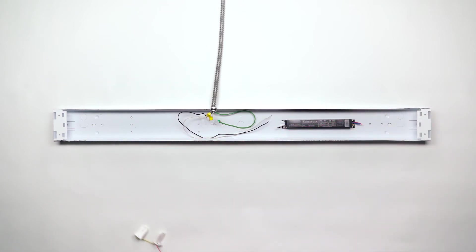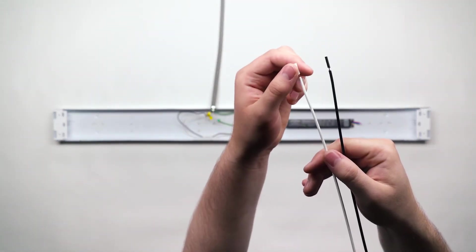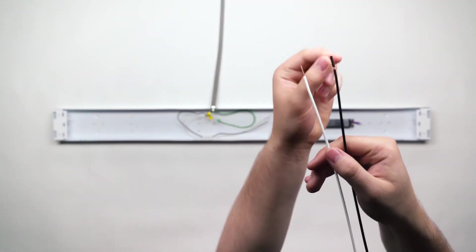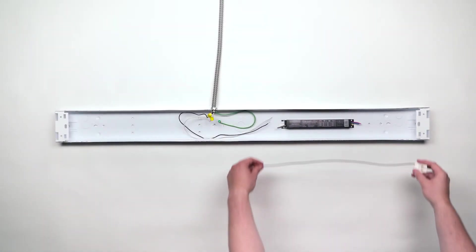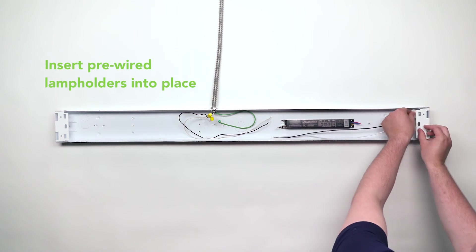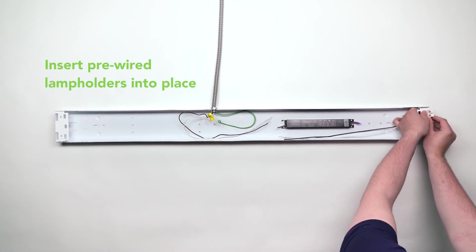Now you're ready to install your pre-wired lamp holders. Choose one end of the fixture to be powered, as toggled tubes accept power only at one end. Each toggled pre-wired lamp holder has one black wire and one white wire. For additional convenience, they're also pre-stripped. Insert the pre-wired lamp holders into the end of the fixture that you've selected to be powered.